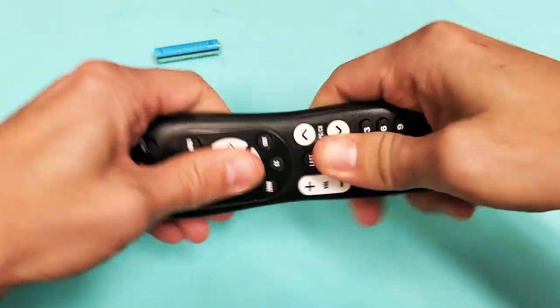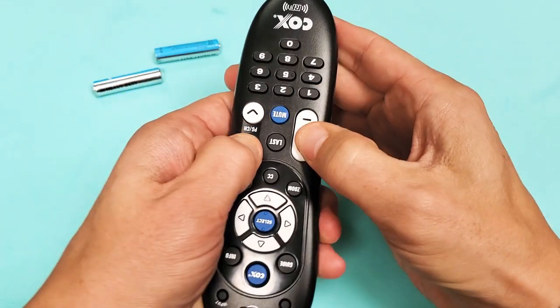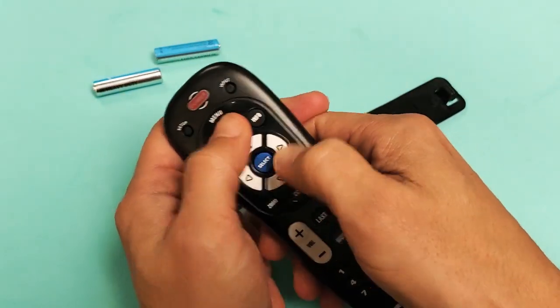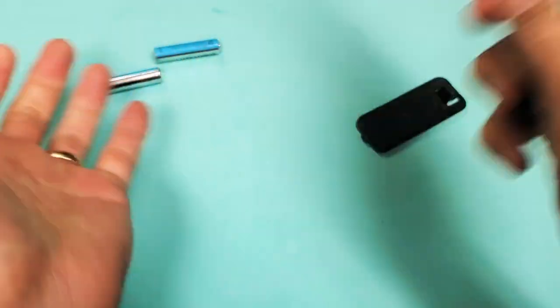So again, press every single button all the way down - every single number, up, down, left, right. Don't forget even all these other buttons up here: the menu, the guide, the setup, the input, power. Now give it a couple of whacks.